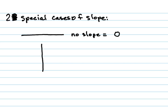You can also have a vertical line — actually, there are two special cases you're going to worry about. With a vertical line, it is impossible to measure how much it's going up or down, so the slope is undefined. To summarize: a horizontal line is flat, no up and down, so there's no slope — that's zero. Straight up and down can't be measured, so the slope is undefined.